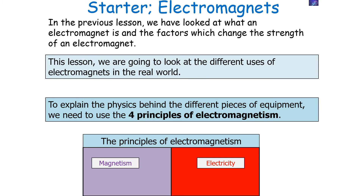In the previous lesson, we looked at what an electromagnet is and the factors which change the strength of an electromagnet. Now this lesson, we're going to look at the different uses of electromagnets in the real world. To explain the physics behind the different pieces of equipment, we need to use the four principles of electromagnetism.